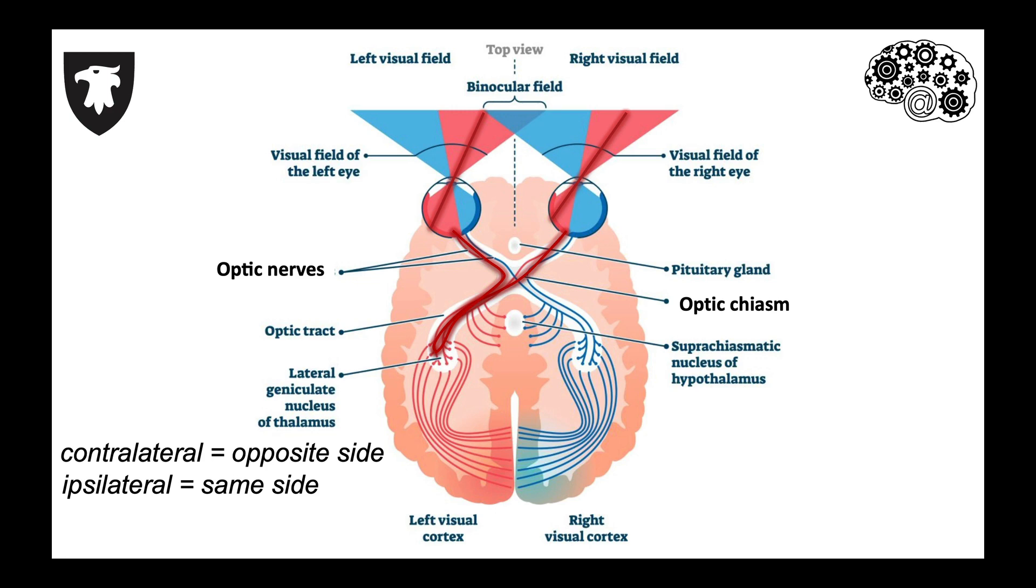After the optic chiasm, these axons continue on each side through the optic tract, which continues to the lateral geniculate nucleus or LGN in the thalamus. The axon terminals synapse here and then the signal gets sent through the optic radiation to the primary visual cortex on the contralateral side of the brain.